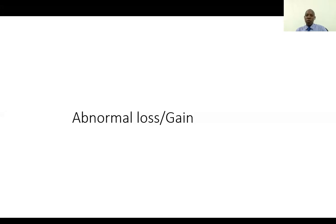This is the third tutorial on process costing. In the previous tutorial we looked at normal loss and expected loss. In this tutorial we are going to look at abnormal loss or abnormal gain, because usually every month the loss actually incurred can differ from what is expected. We will have either an abnormal loss, which is an excess loss — more than what we expected — or an abnormal gain, meaning we have lost less than what was expected. I'm going to explain these things using examples.